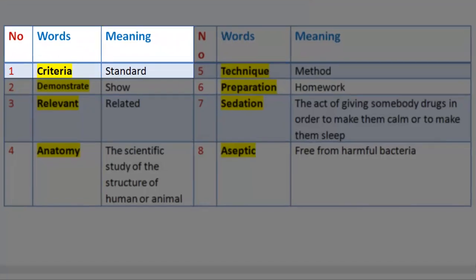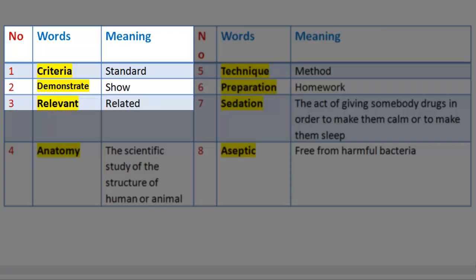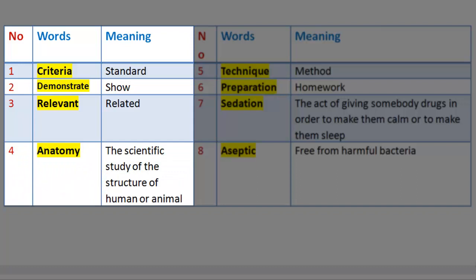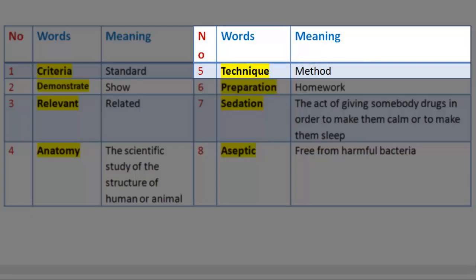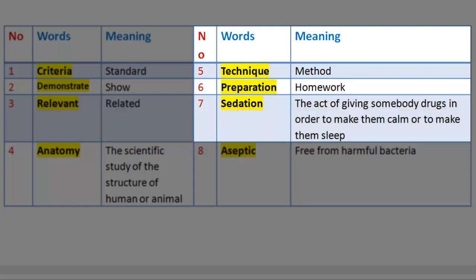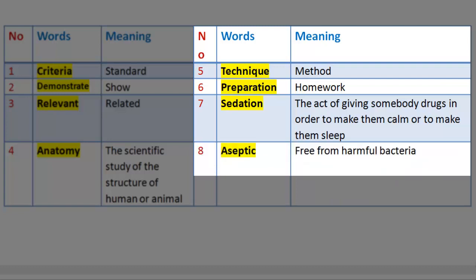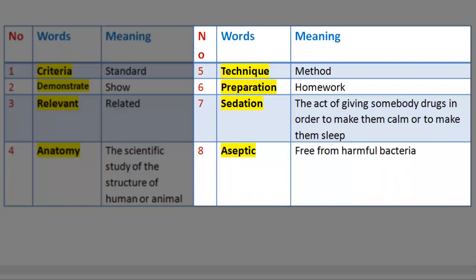Vocabulary 5. Number 1: Criteria — meaning standard. Number 2: Demonstrate — meaning show. Number 3: Relevant — meaning related. Number 4: Anatomy — meaning the scientific study of the structure of human or animal. Number 5: Technique — meaning method. Number 6: Preparation — meaning homework. Number 7: Sedation — meaning the act of giving somebody drugs in order to make them calm or to make them sleep. Number 8: Aseptic — meaning free from harmful bacteria.